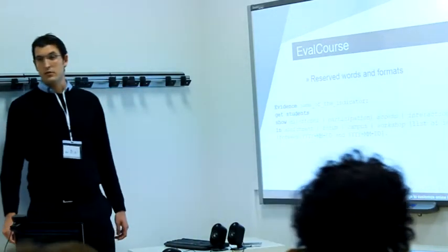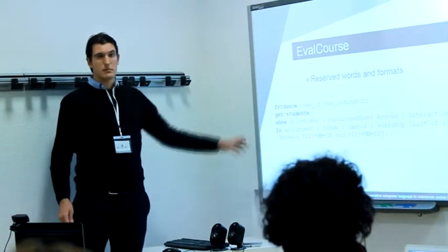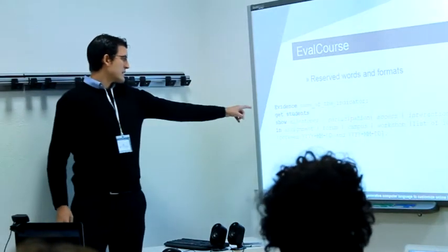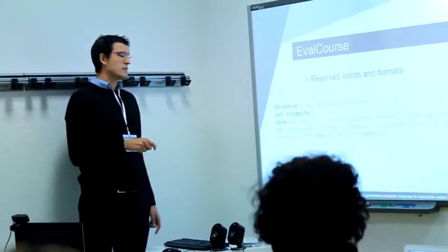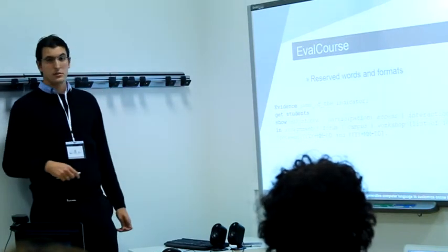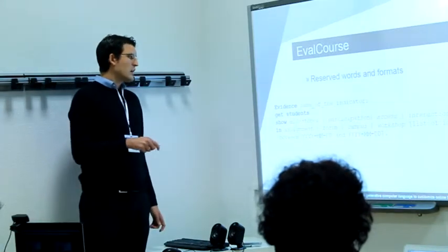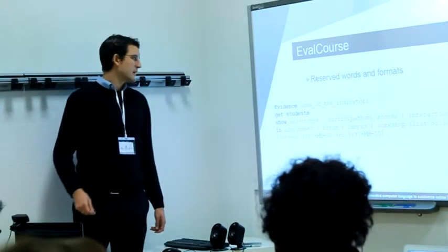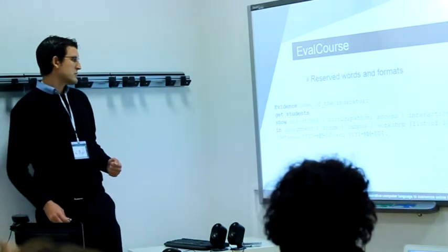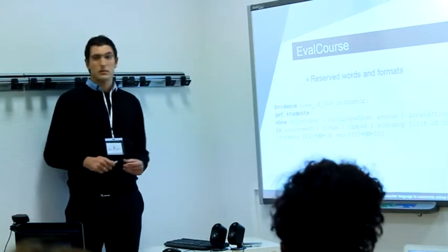These are the reserved words and formats. I have divided it into lines to explain it better, but we can combine all the lines together. The first line: evidence, followed by the name of the indicator. In the second line, you have to write a way to get students. And in the third one, show, followed by the operator that we are going to apply. It can be milestones, participation, access, or interaction. Milestones are activities that have to be delivered before a deadline.